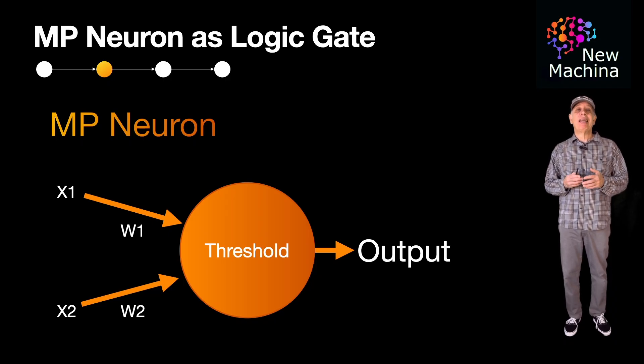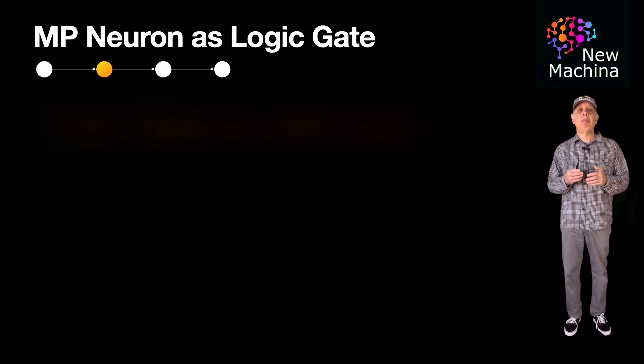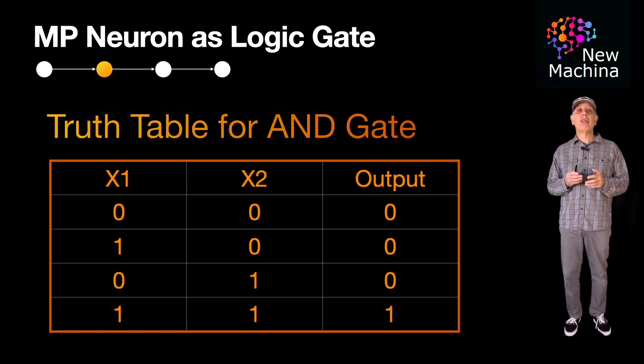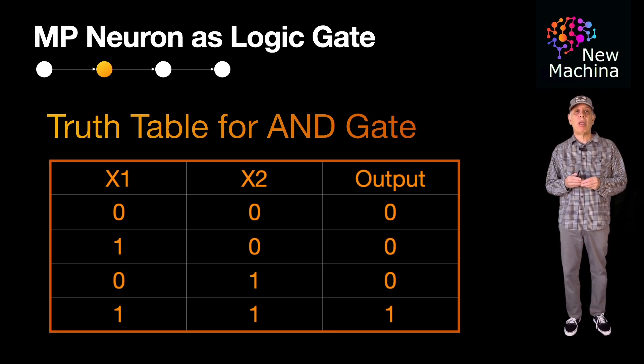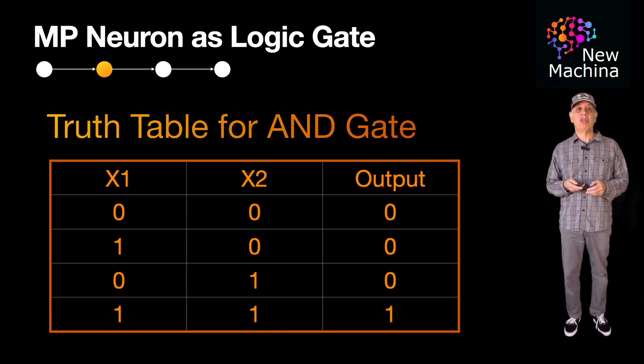Now, the MP Neuron can simulate basic logical operations like AND, OR, and NOT, which made it particularly interesting for early computational theory. Let's look at using an MP Neuron to implement a logical AND gate. Here's a truth table for the AND gate. You can see, to implement an AND gate, if both inputs are 1, then the output is 1. Otherwise, the output is 0.